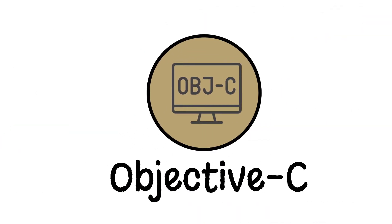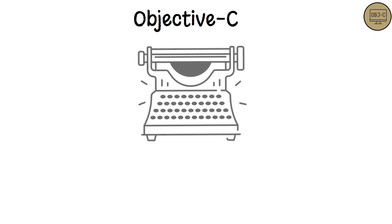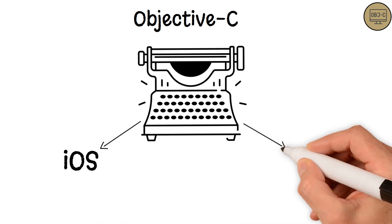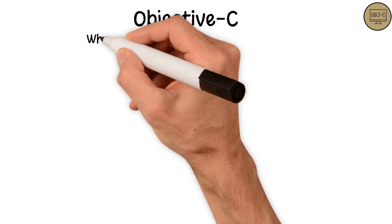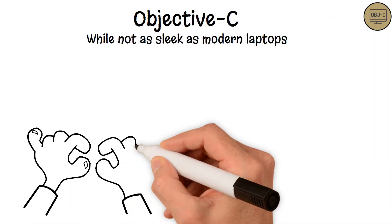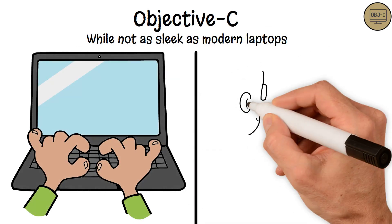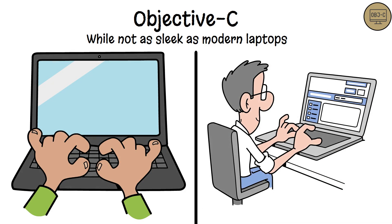Objective-C. Imagine Objective-C as an older, reliable typewriter. Used primarily for writing iOS and macOS applications, it's like a tool that has crafted many stories before the advent of newer technologies. While not as sleek as modern laptops, it's robust and gets the job done, especially for those maintaining legacy applications.